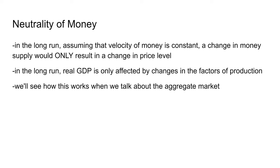The neutrality of money states that in the long run, assuming velocity of money is constant, any change in money supply would change the price level but not real GDP. The reason it doesn't change real GDP is because in the long run, what changes GDP are the factors of production — land, labor, capital, entrepreneurship, and technology. We'll see how the neutrality of money works when we talk about the aggregate market.